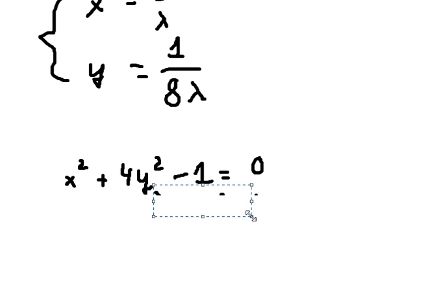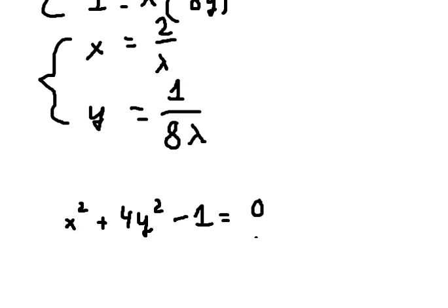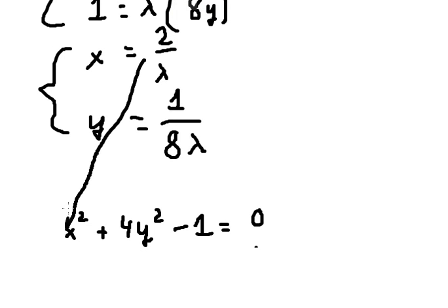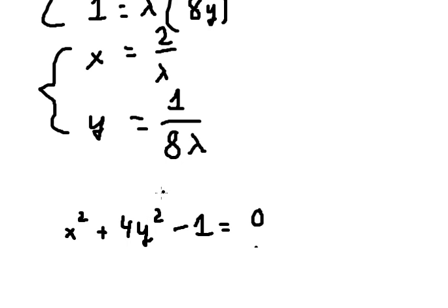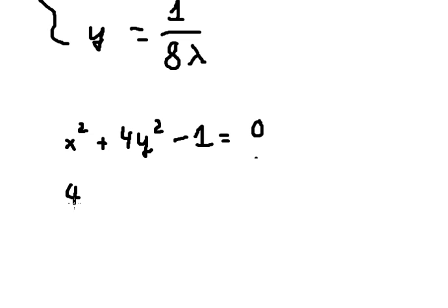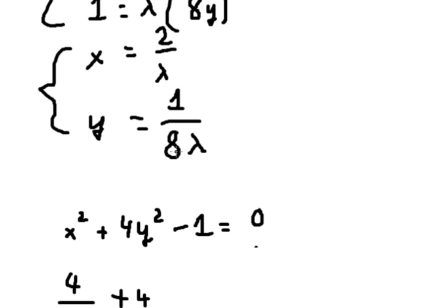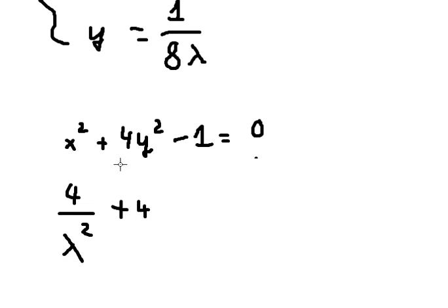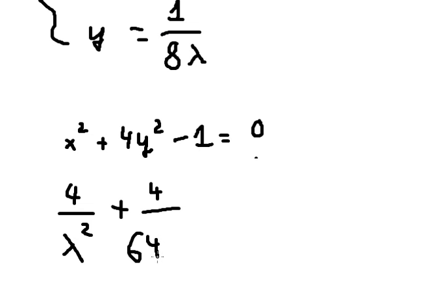Now we put x and y back into the constraint to find the value of lambda. We know that two over lambda to the power two gives four over lambda squared. For the y term, one over eight lambda to the power two gives four over 64 lambda squared, minus one.